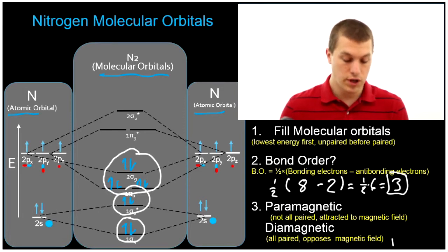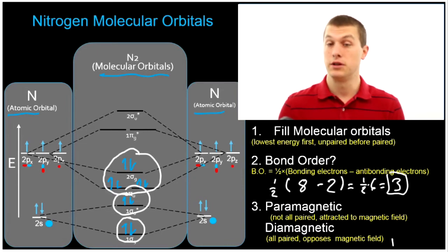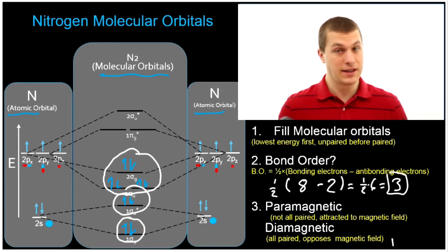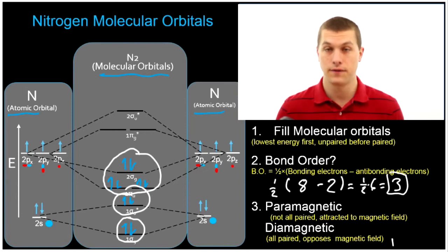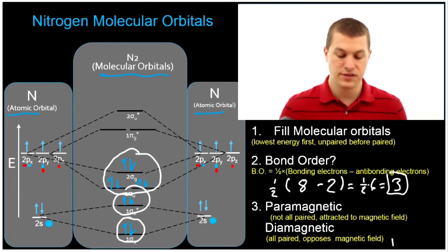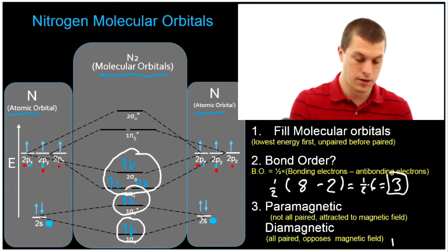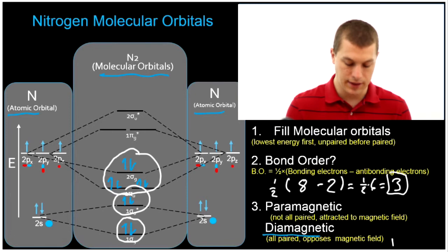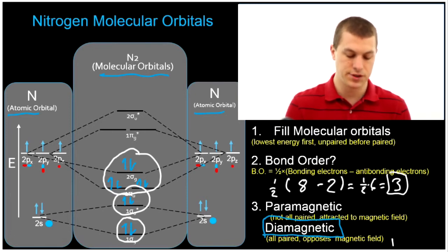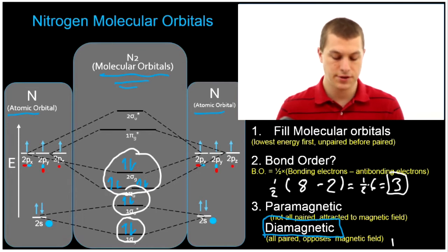So what we can do with our molecular orbital diagrams after we fill them in is calculate the bond order. We can also determine if the material is diamagnetic or paramagnetic — that is, how will it respond to a magnetic field? Paramagnetic things are attracted to magnetic fields, whereas diamagnetic things are repelled by the magnetic field. The way we tell if something is paramagnetic or diamagnetic is if all the electrons in the molecular orbital are paired. If they're all paired, that makes them diamagnetic. You can see that for nitrogen, every single electron in our molecular orbital diagram is paired, and so we know that nitrogen is diamagnetic — it will tend to be repelled by a magnetic field.